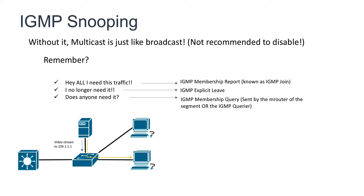Now let's say that the client is done with the multicast stream and it closes the video application. It may send an IGMP explicit leave, which is the second message. This will make the switch update its table and prevent multicast traffic for that specific group from being forwarded through that interface.